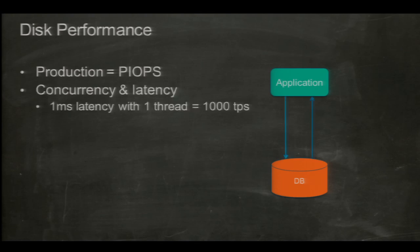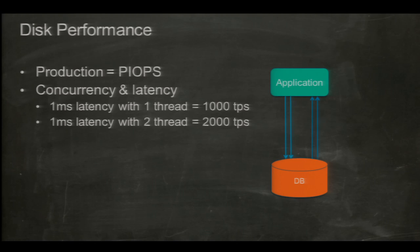One thing some folks don't notice about Provisioned IOPS is the combination between concurrency and latency. If you're doing a round trip every one millisecond, that one thread can only do 1,000 transactions per second — that's just the inherent latency. The only way to get more TPS is to have more threads. You can buy a very big server and put a lot of PIOPS on it, but unless you have enough concurrency, you won't see the results. Sometimes people come to us saying they couldn't use everything, and it's because they were only running around five threads.